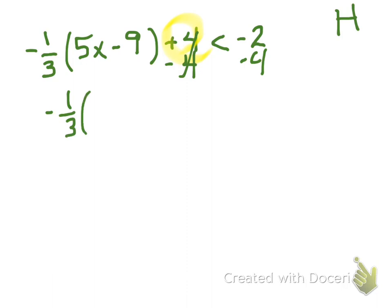Negative one-third times five X minus nine is less than negative six. Okay. So now we can multiply by the reciprocal to get rid of this fraction. And once again, you could distribute that fraction, but then you've just got more fractions to deal with. So I want to get rid of it right off the bat by multiplying by the reciprocal.